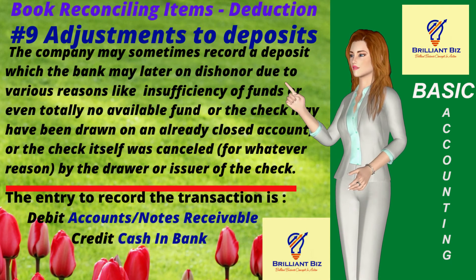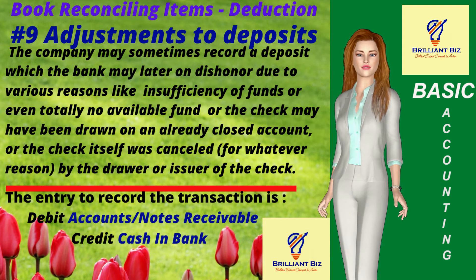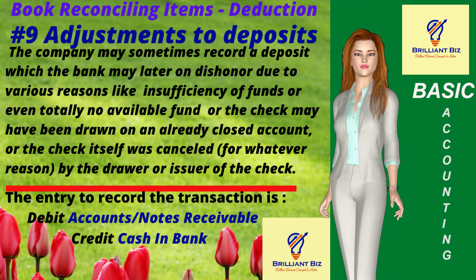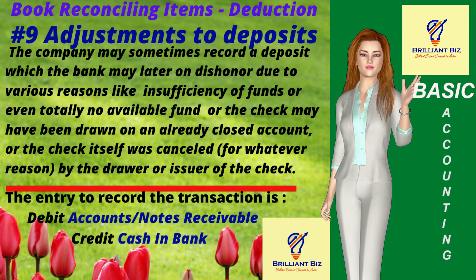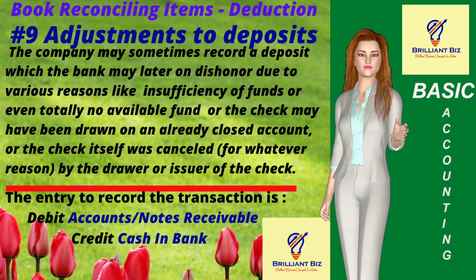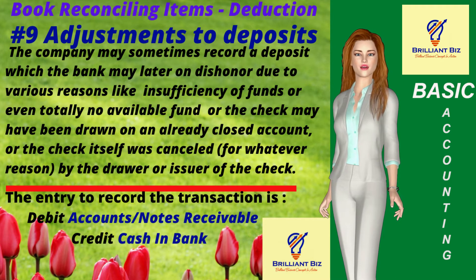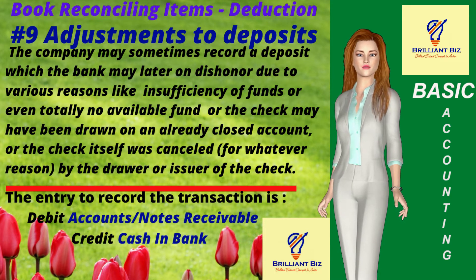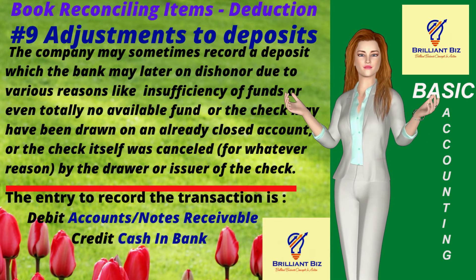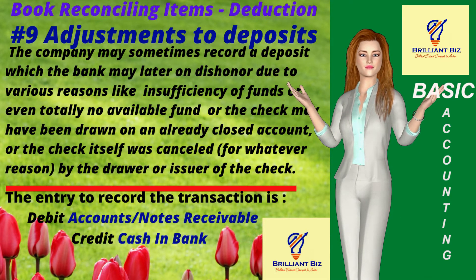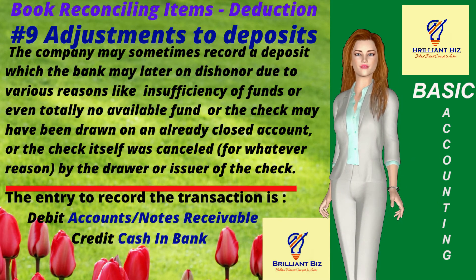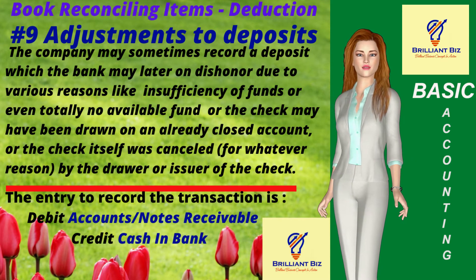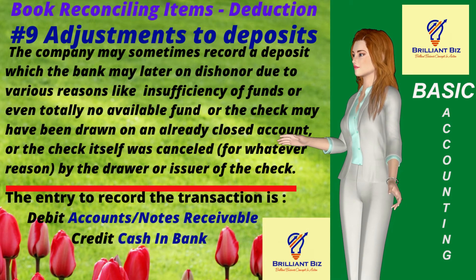Item 9: Adjustments to deposits. The company may sometimes record a deposit which the bank may later dishonor due to various reasons like insufficiency of funds or the check was cancelled by the drawer. The entry to adjust the company's book balance is to reverse the entry taken up when the check was received — for example, debit accounts or notes receivable and credit cash-in-bank for the same amount previously recorded as deposits.